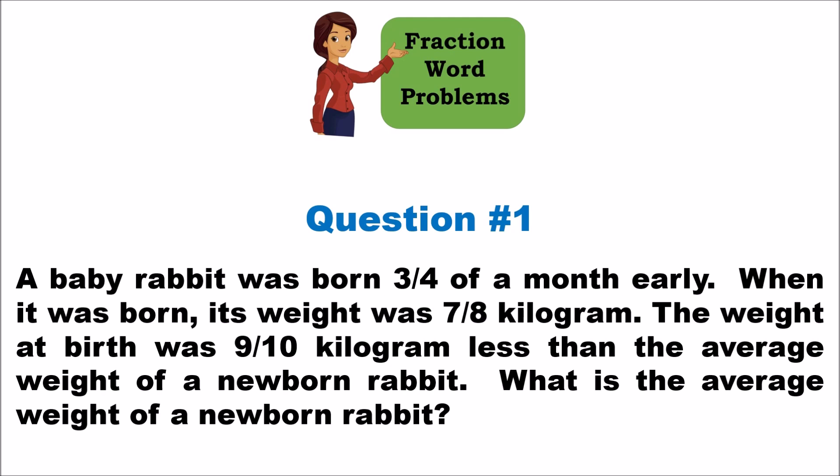A baby rabbit was born three-fourths of a month early. When it was born, its weight was seven-eighths of a kilogram. The weight at birth was nine-tenths of a kilogram less than the average weight of a newborn rabbit. What is the average weight of a newborn rabbit?